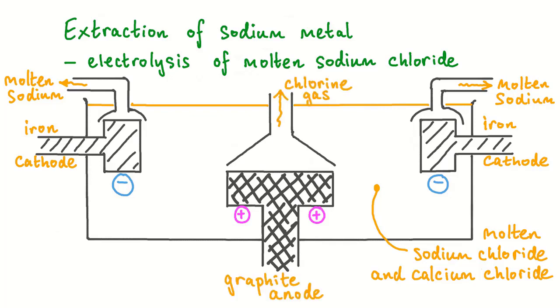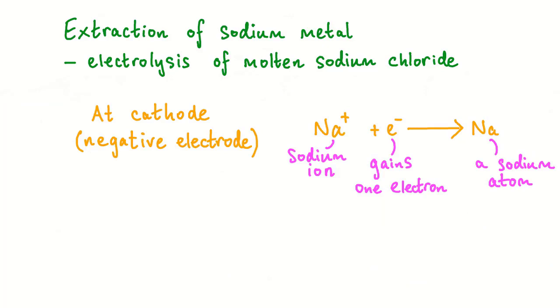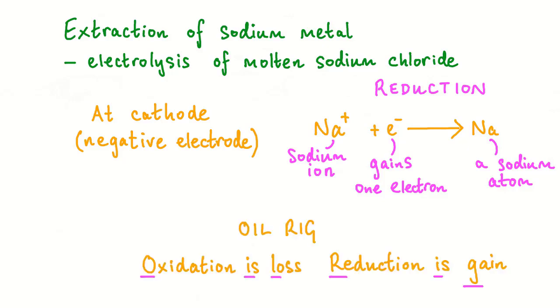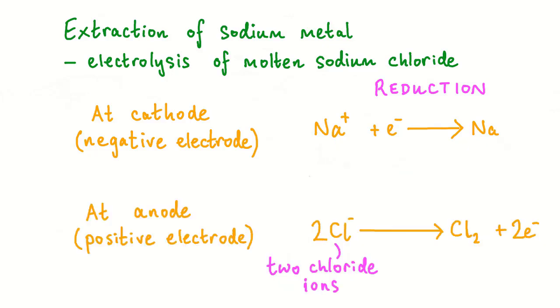The anode, or positive electrode in this cell, is made from graphite. And this is where chlorine gas is produced. At the negative electrode, or cathode in this cell, a sodium ion gains one electron to become a sodium atom. The half equation shown here represents a reduction process. This is easily remembered using the mnemonic OIL RIG, where oxidation is loss and reduction is gain of electrons.